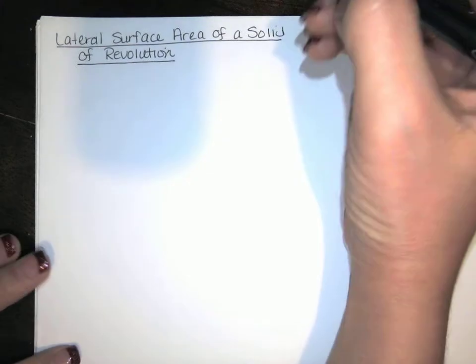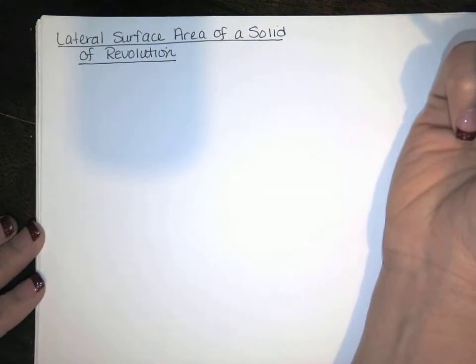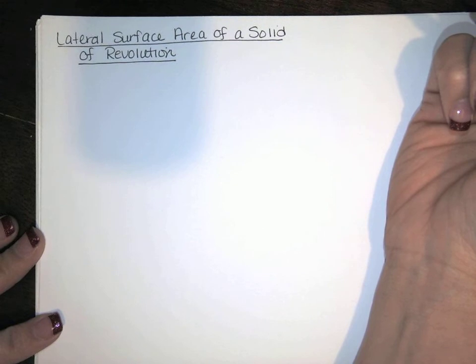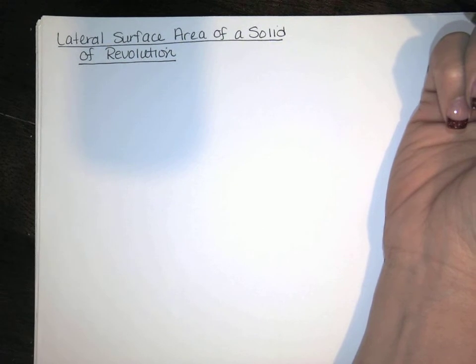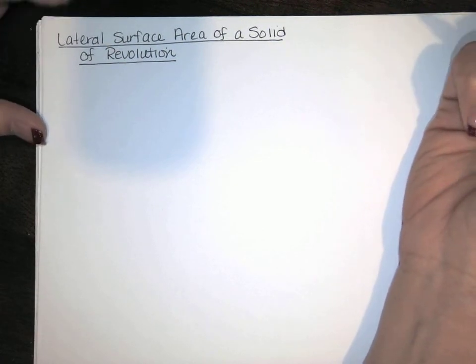In this video, we are going to use integration to find the lateral surface area of a solid of revolution. We derive this formula the same way that we derived the formulas for all the other sections.